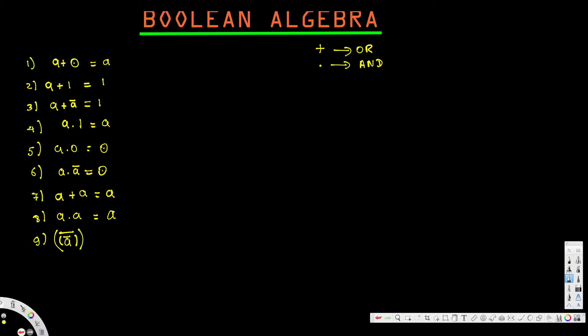For the double complement ā̄: if a is one, ā is zero, and the complement of zero is one — like a double negative giving a positive. So ā̄ = a. Next, the distributive law: a · (b + c) is similar to multiplication in math, so we can expand it as ab + ac.